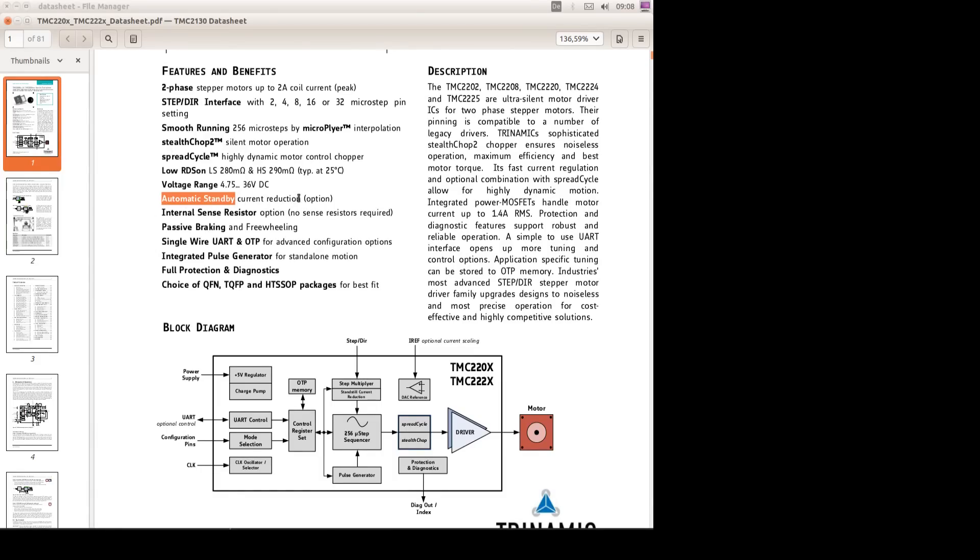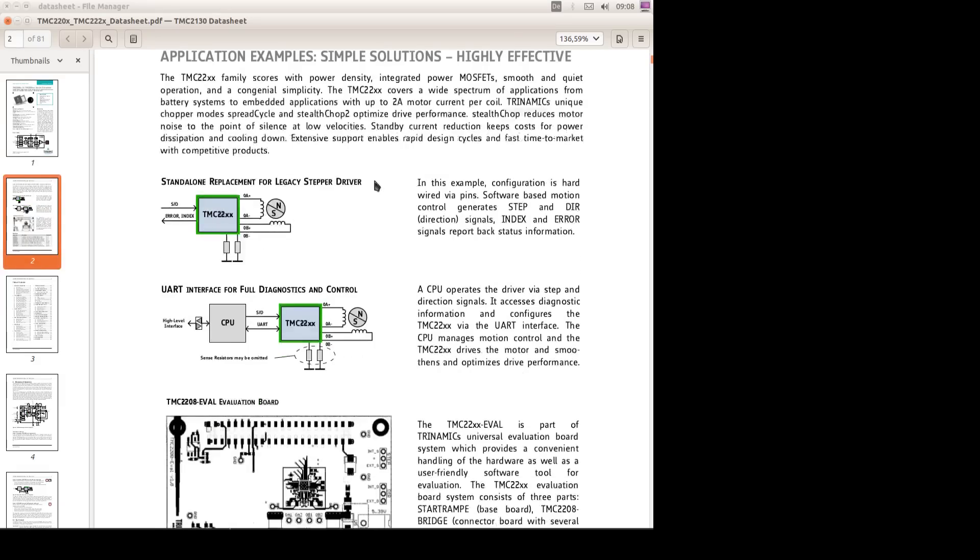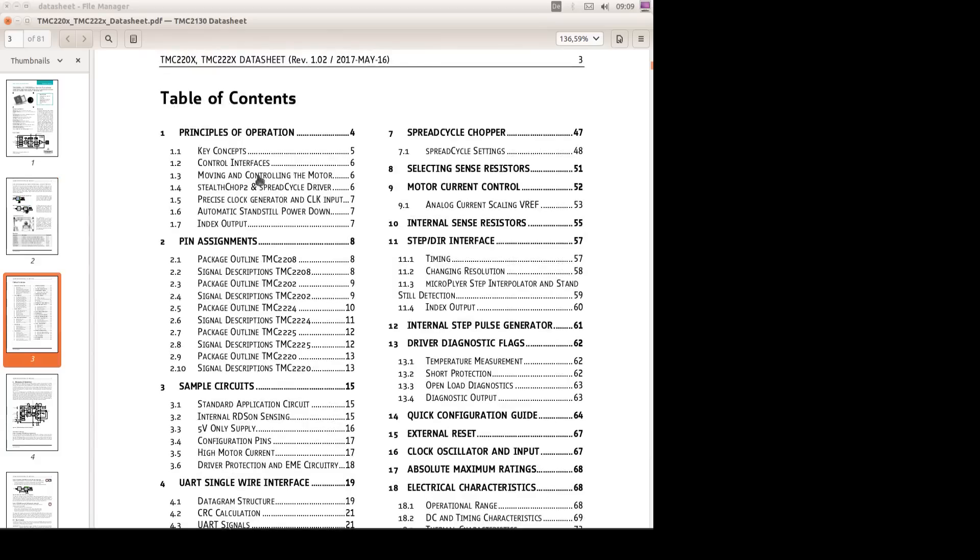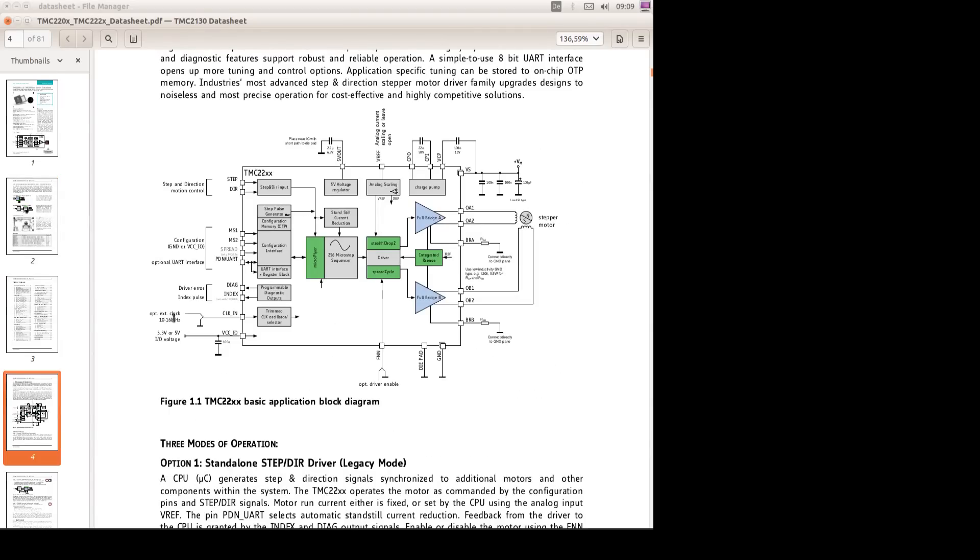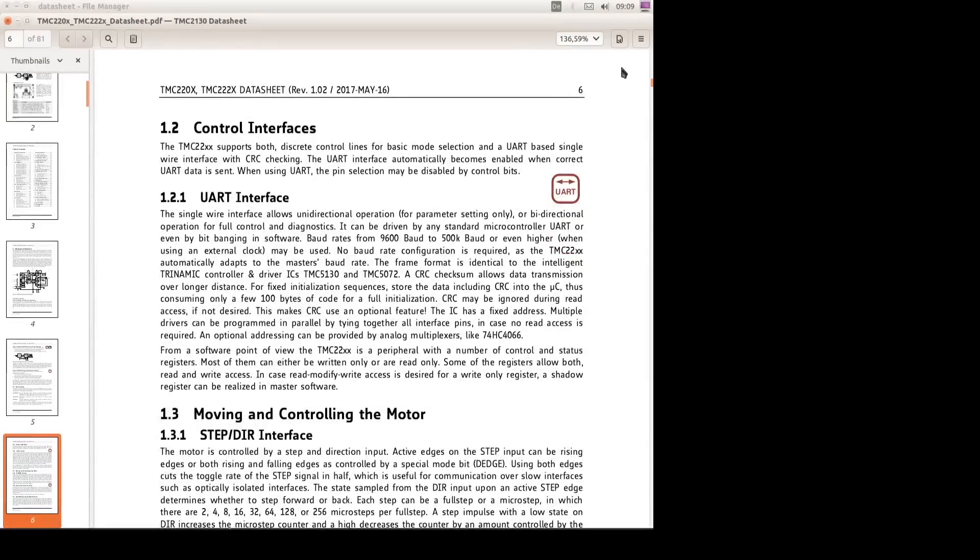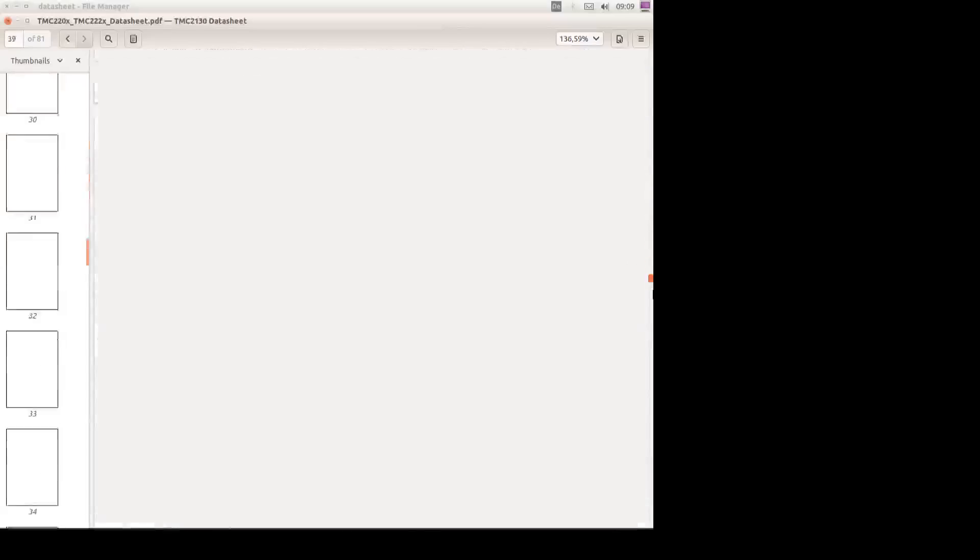Where is the input range for the clock and step direction? I think we can easily use 3.3 volts from our microcontroller, for instance the ESP32. Here: 3.3 or 5-volt IO voltage—that's the necessary thing we need to know. We have 81 pages to read, so it's not easy to use this chip.